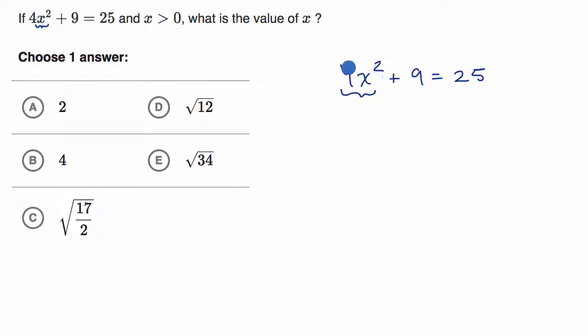So if we just want to have the 4x² here on the left, we'd want to get rid of this nine. The best way to get rid of that nine is to subtract nine, but of course, in order to maintain the equality, you have to do whatever you do to the left, you have to do to the right.